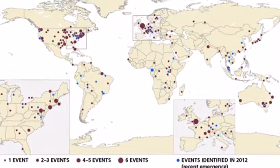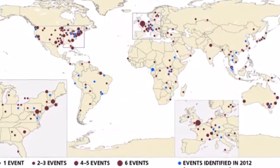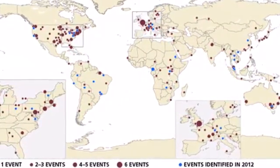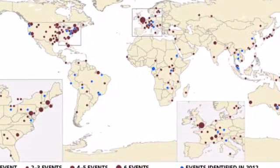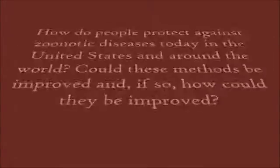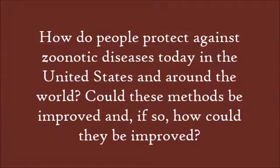Zoonotic diseases still affect humans today all over the world. So my question to you is: how do people protect against zoonotic diseases today in the United States and around the world? Could these methods be improved, and if so, how could they be improved?